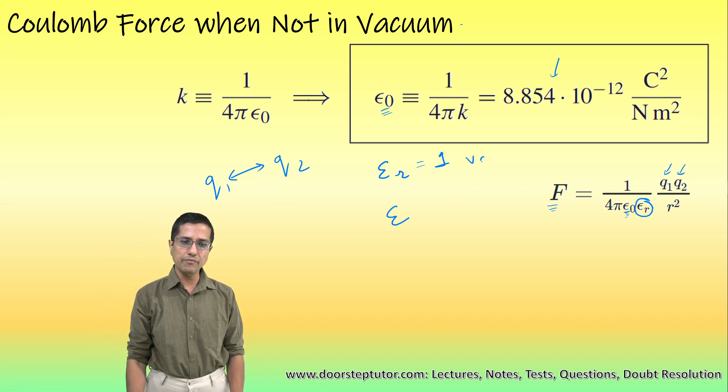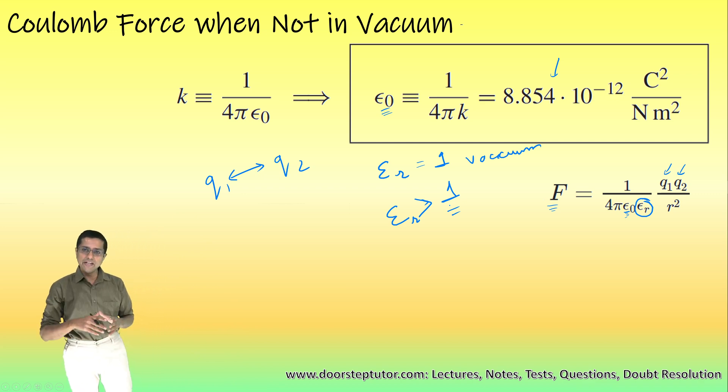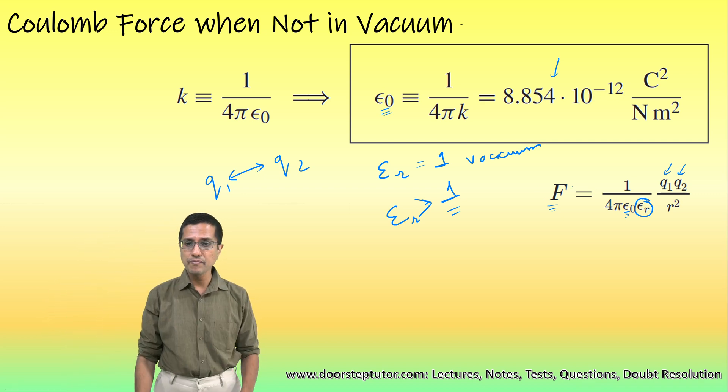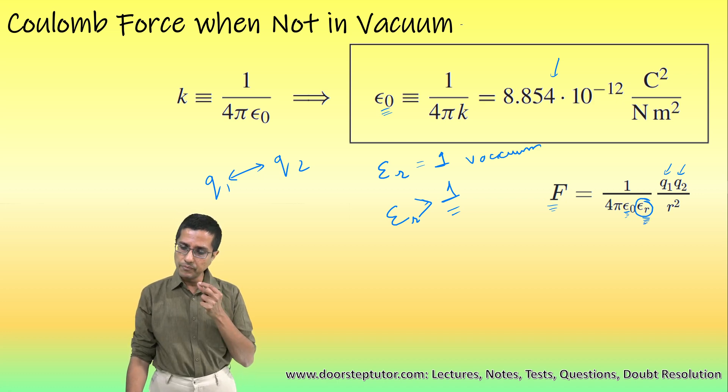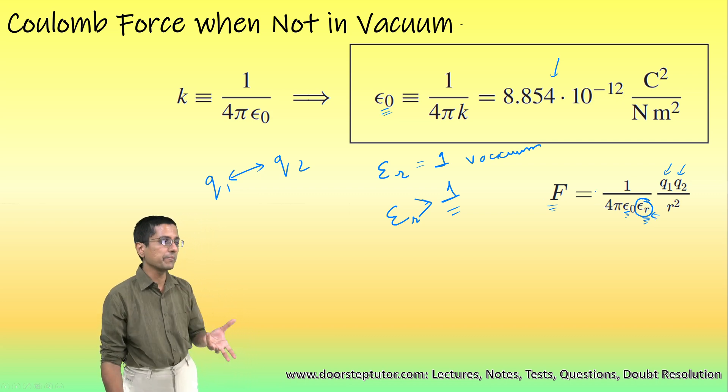So epsilon r is equal to 1 for vacuum. For all other mediums, this epsilon r is actually greater than 1, which means that all the mediums except vacuum reduce this Coulomb force by a certain amount, by a certain factor, and this factor is known as relative permittivity.